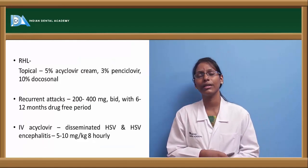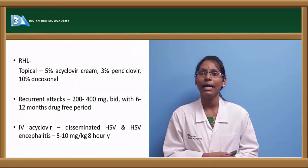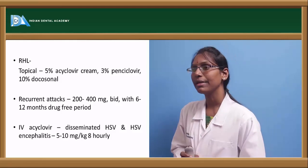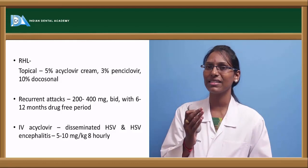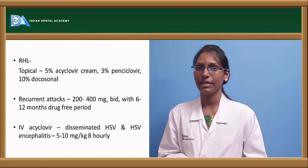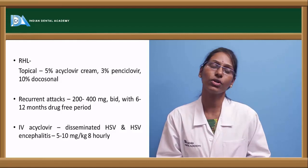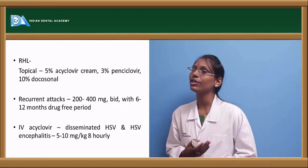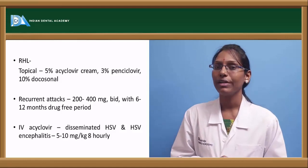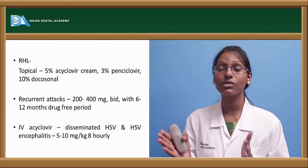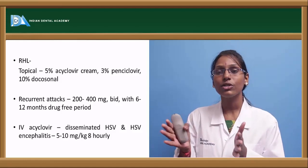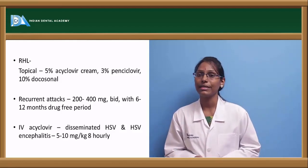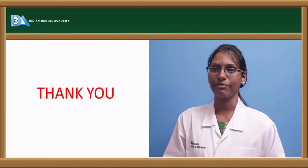For management of recurrent herpes labialis, 5% acyclovir topical cream can help reduce the tingling sensation and aid faster healing. 3% penciclovir and 10% docosanol can also be given. To prevent recurrent attacks, 200 to 400 mg acyclovir twice daily for about 6 to 12 months is recommended, followed by a 6 to 12 month drug-free period. IV acyclovir is also available and is the mainstay of treatment for HSV encephalitis.